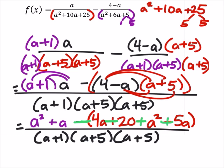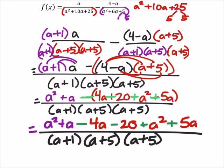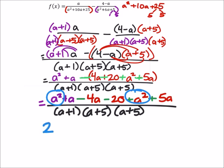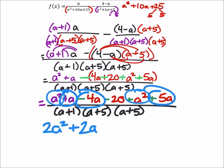I'll go ahead and rewrite that. This is great because now we can see what like terms we can combine. I've got this a squared and this a squared, which gives me 2a squareds. I've got this a minus 4a is negative 3a plus this 5a would be plus 2a. And then the minus 20.